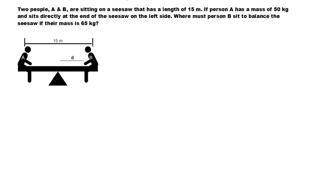So, let's write down what we know. We know the mass of person A equals 50 kilograms. We know the mass of person B equals 65 kilograms.